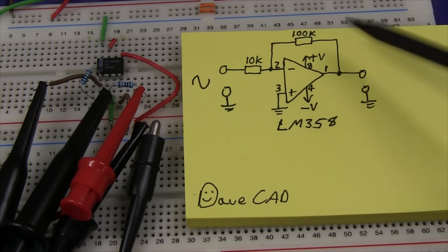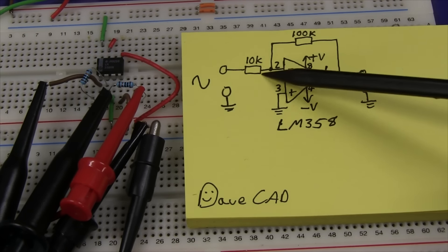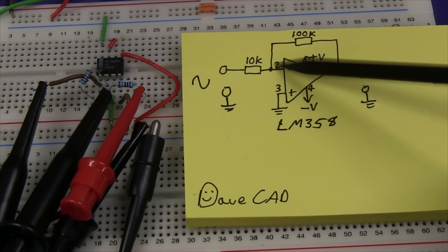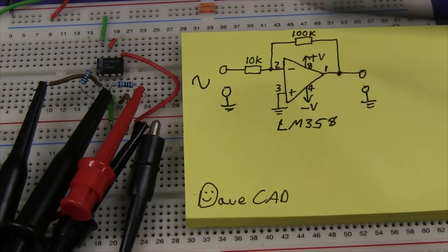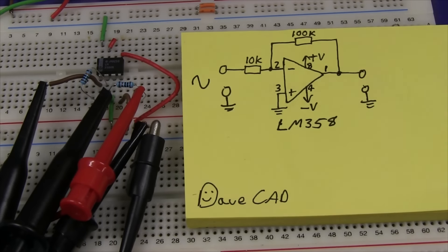So trap for young players — when you're probing around circuits like this, don't think your signal's vanished. Virtual ground. Remember your op amp rules. Always.